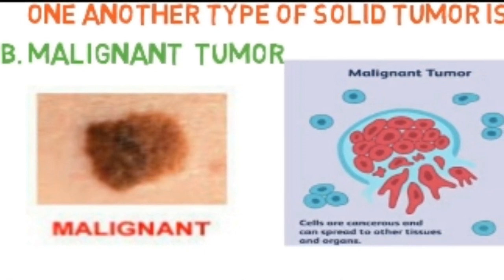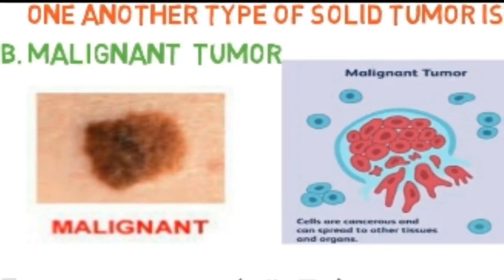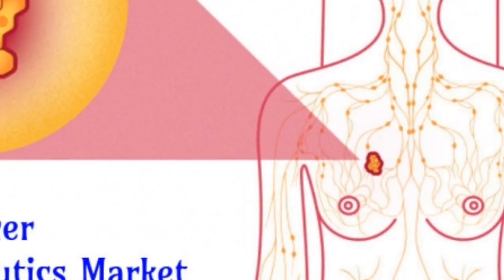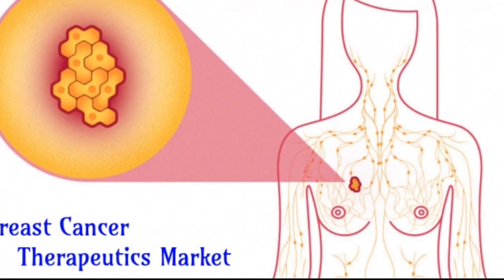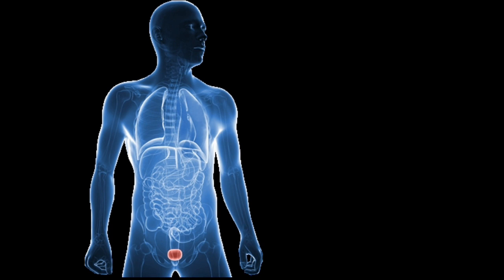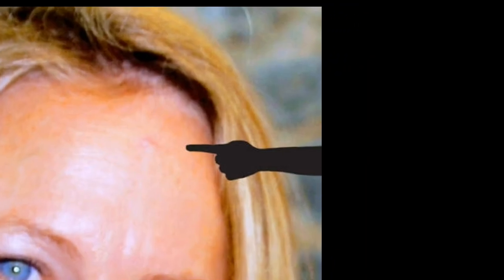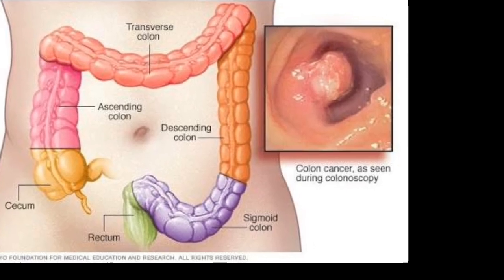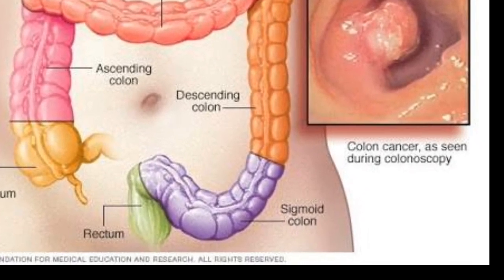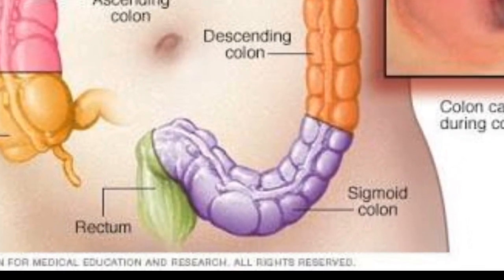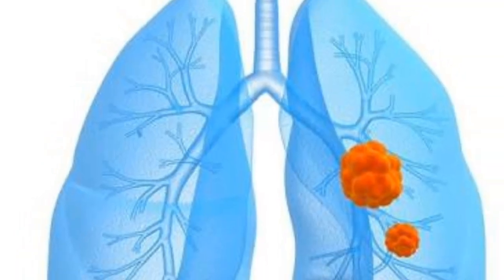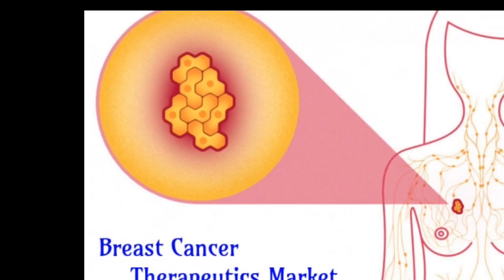Breast cancer is a cancer that forms in the cells of the breast. Prostate cancer is a cancer in a man's prostate, a small walnut-shaped gland that produces seminal fluid. Basal cell cancer is a type of skin cancer that begins in the basal cells. Melanoma is the most serious type of skin cancer. Colon cancer is a cancer of the colon or rectum, located at the digestive tract's lower end. Lung cancer is a cancer that begins in the lungs.